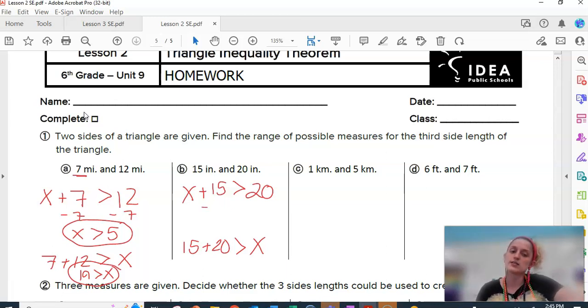Solve by isolating x, get rid of that 15. Oh, look, this one is also x is bigger than 5. That's just a coincidence.